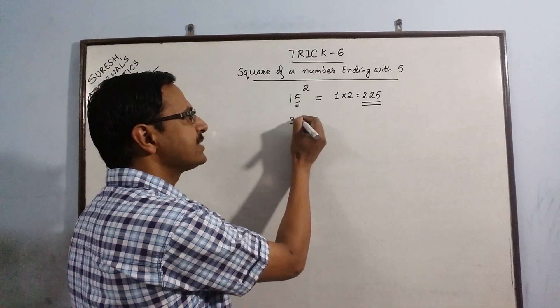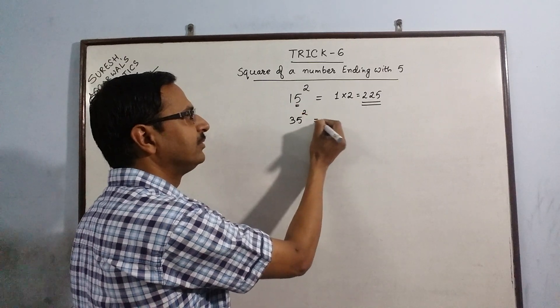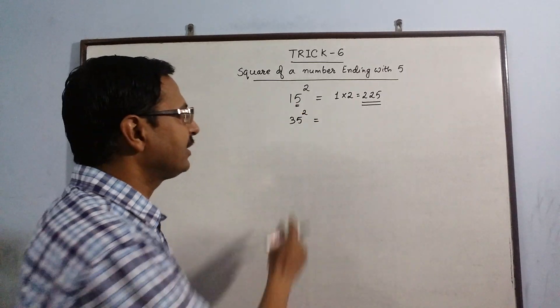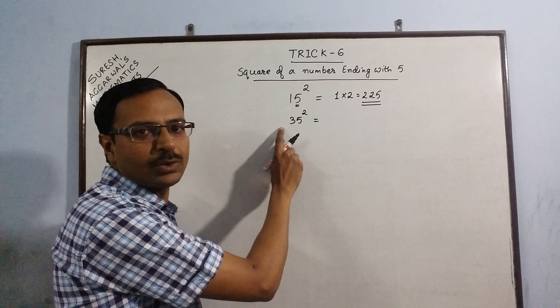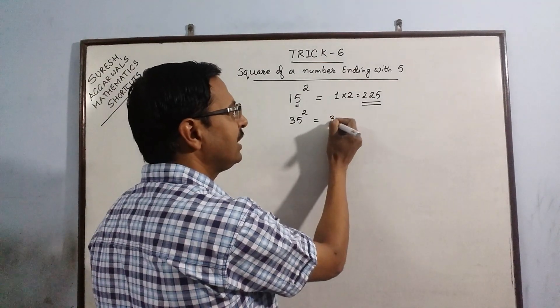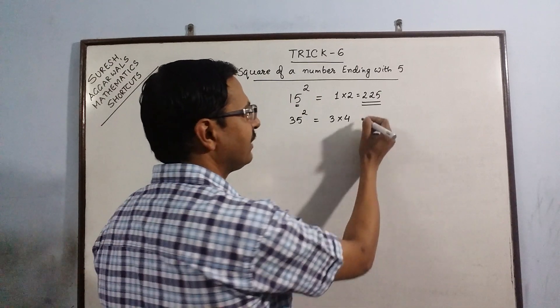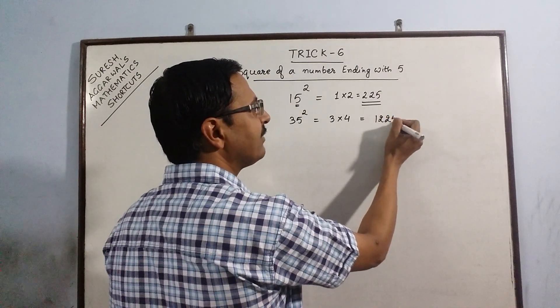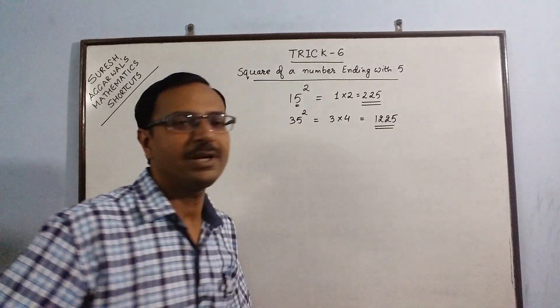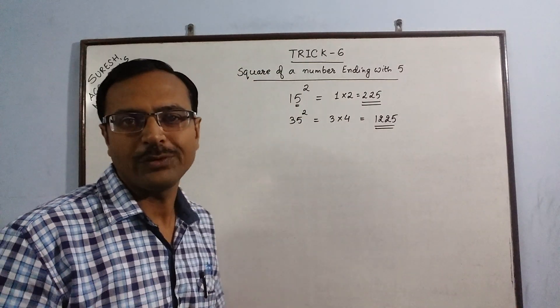Let's take one more example. 35 square. Forget the 5, concentrate on 3. So 3 multiplied by its successor 4 gives us 12, and just put a 25 after that. So 35 square is 1225.